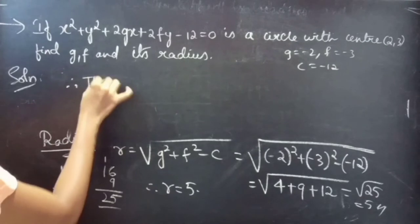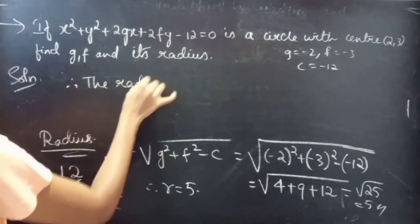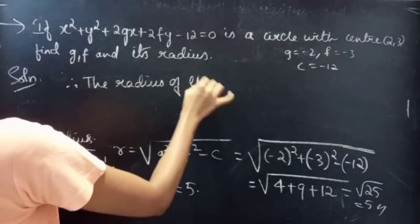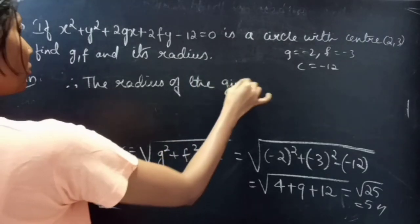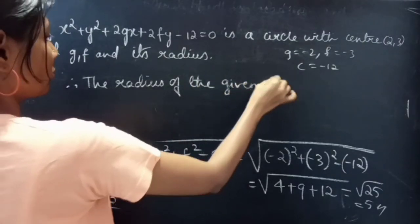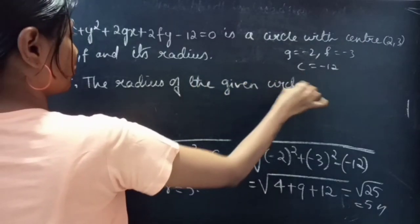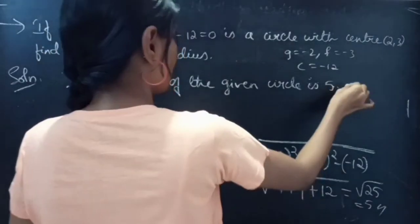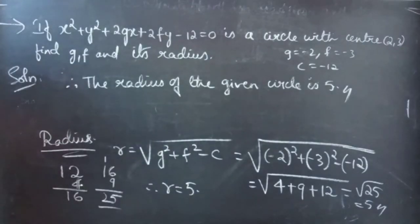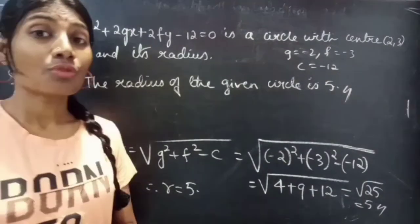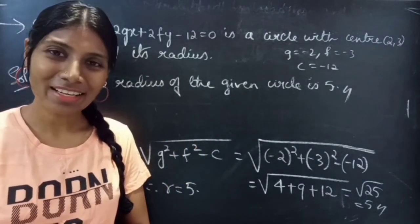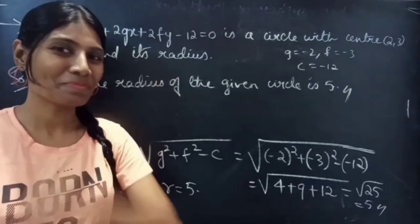Therefore, the radius of the given circle is 5. So we have seen a problem from circle in this video. Hope you all understand. We will see you in the next video. Until then, bye-bye.